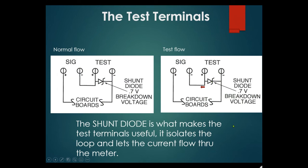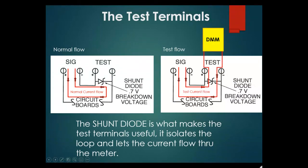Normal current flow goes directly through the transmitter path. When a digital multimeter is connected to the test leads, current flows through the meter instead. You can measure the 4 to 20mA signal or connect a communicator right there. The loop was never broken — you're just bypassing the shunt diode. The digital multimeter picks up the current through what's called the shunt diode.